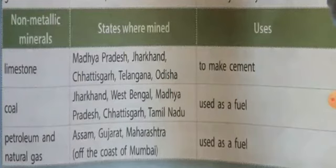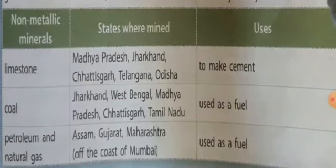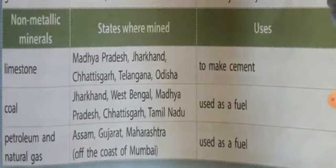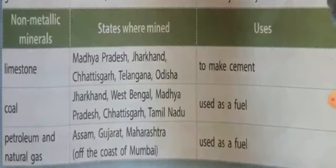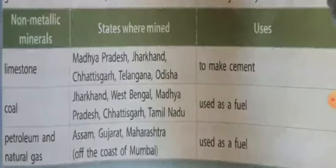Now let us discuss the distribution and importance of non-metallic minerals in India. Limestone is found in Madhya Pradesh, Jharkhand, Chhattisgarh, Telangana, and Odisha. Coal is found in Jharkhand, West Bengal, Madhya Pradesh, Chhattisgarh, and Tamil Nadu, and is used as a fuel.